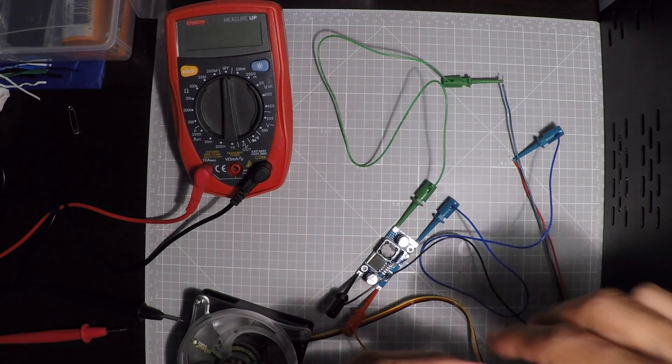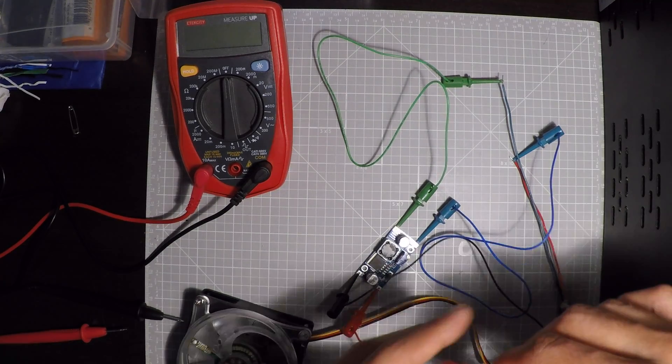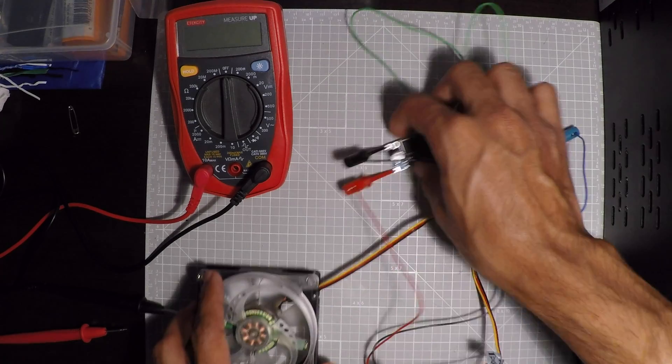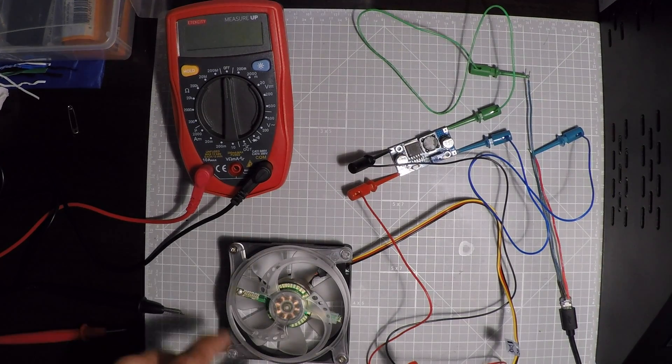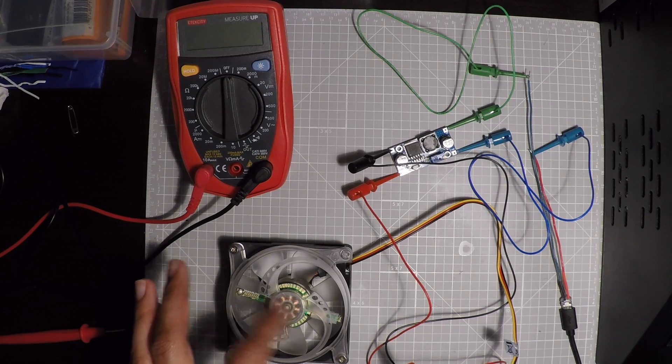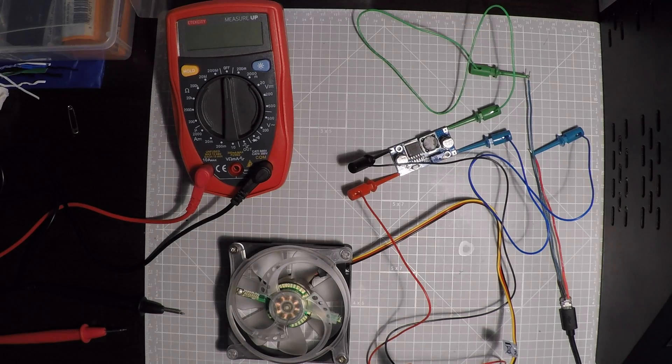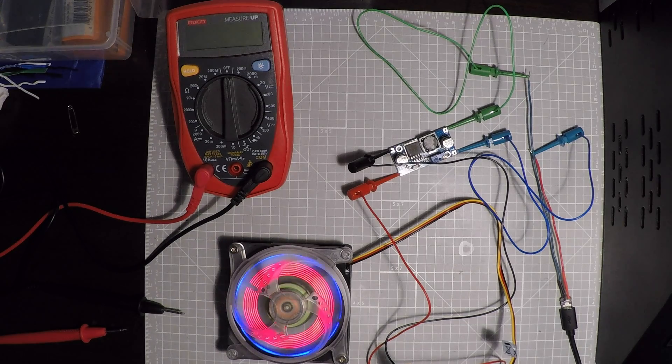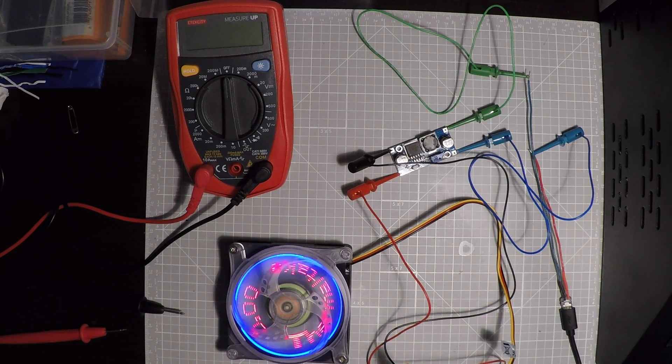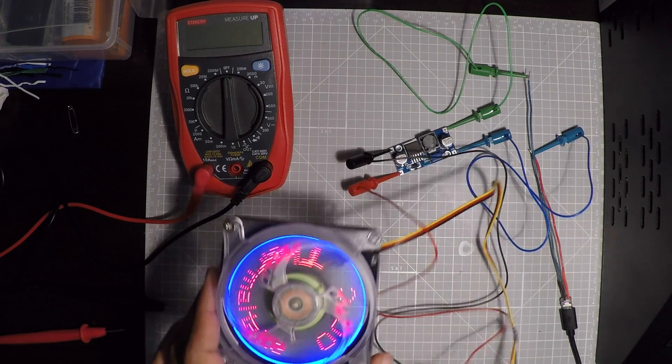If we had 5 volts going to the fan, it wouldn't move because it doesn't have enough power. But now we have 11.9 volts coming to the fan. There we go. It works.